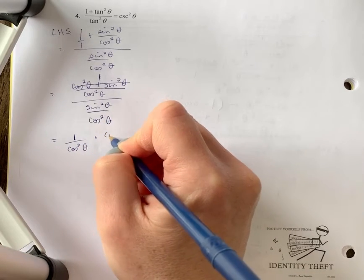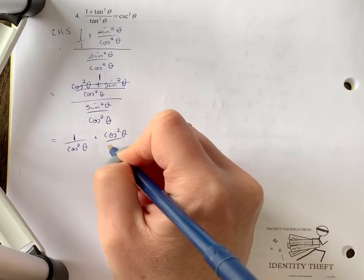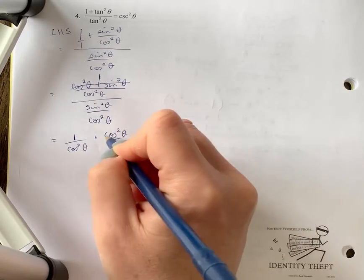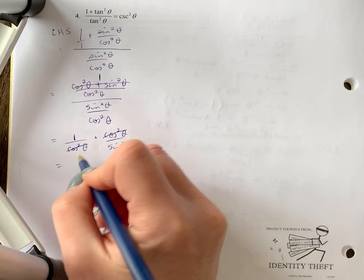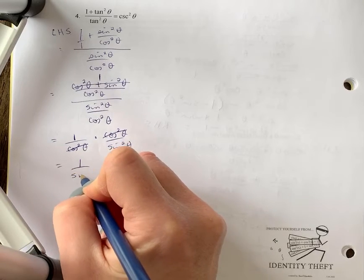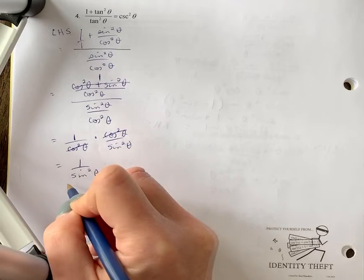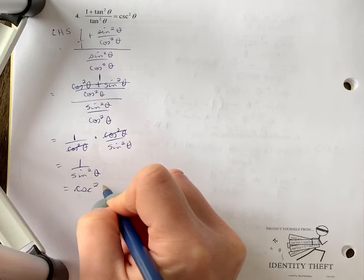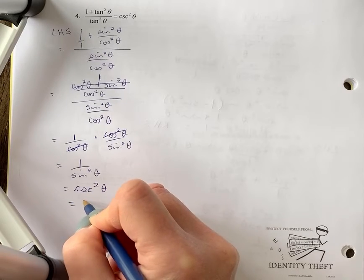And that gets me the cos squareds to cancel out, and I get one over sine squared theta, which is cosecant squared theta. So we have our right-hand side.